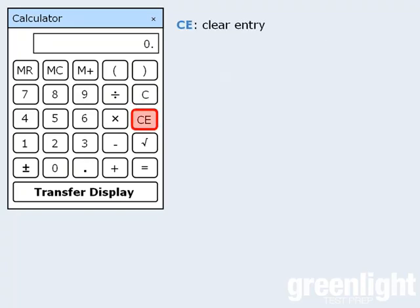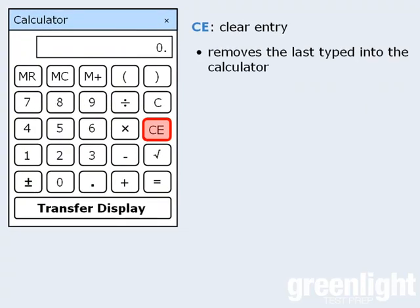This next button is the clear entry button. It removes the last thing you entered into the calculator. For example, let's say you want to add 32 and 71. So you enter 32, then plus, and then you accidentally enter 74 instead of 71. At this point, you can press the clear all button and start all over again,